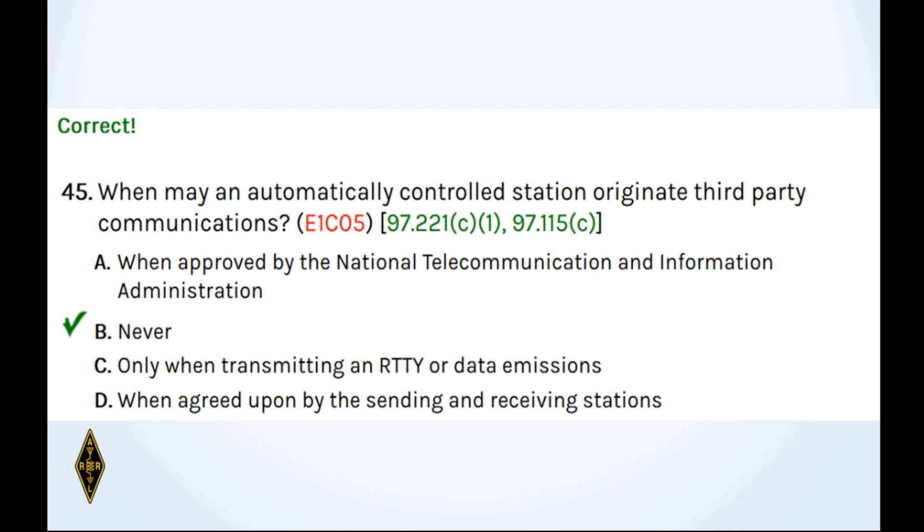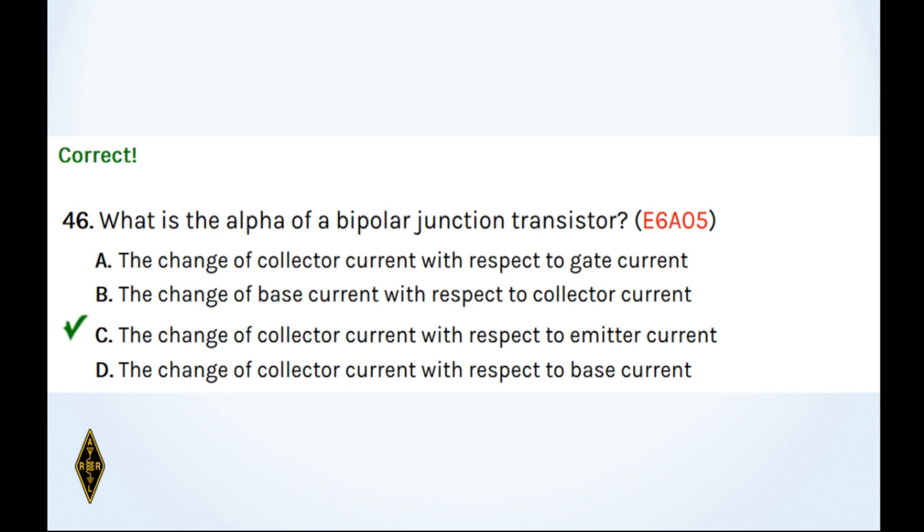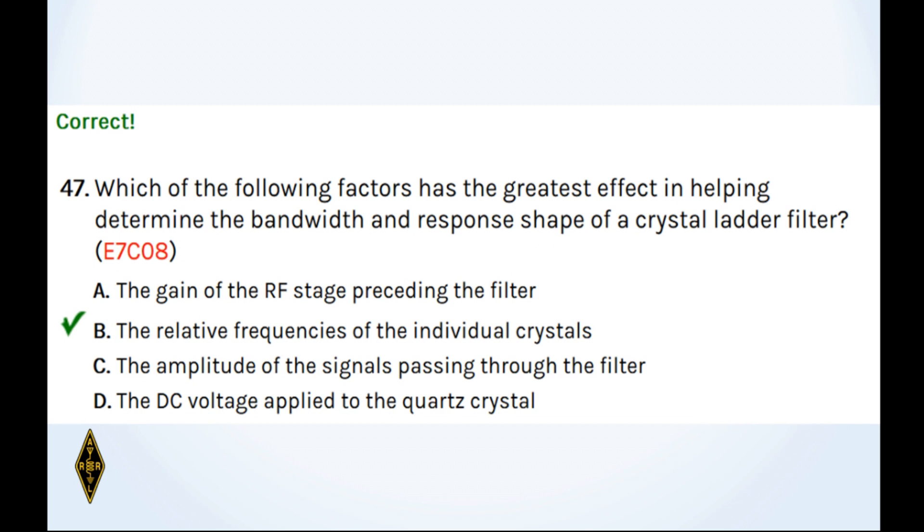And 46, the alpha of a bipolar junction transistor is the change in collector current with respect to the change in emitter current. And it's always going to be less than one. That's the alpha. The beta is going to be the change in base current to the collector current. That's the beta. But alpha is emitter and collector. And which of the following factors has the greatest effect in helping determine the bandwidth and response shape? Well, it's the relative frequencies of the individual crystals being used in the crystal ladder filter, so 47B.